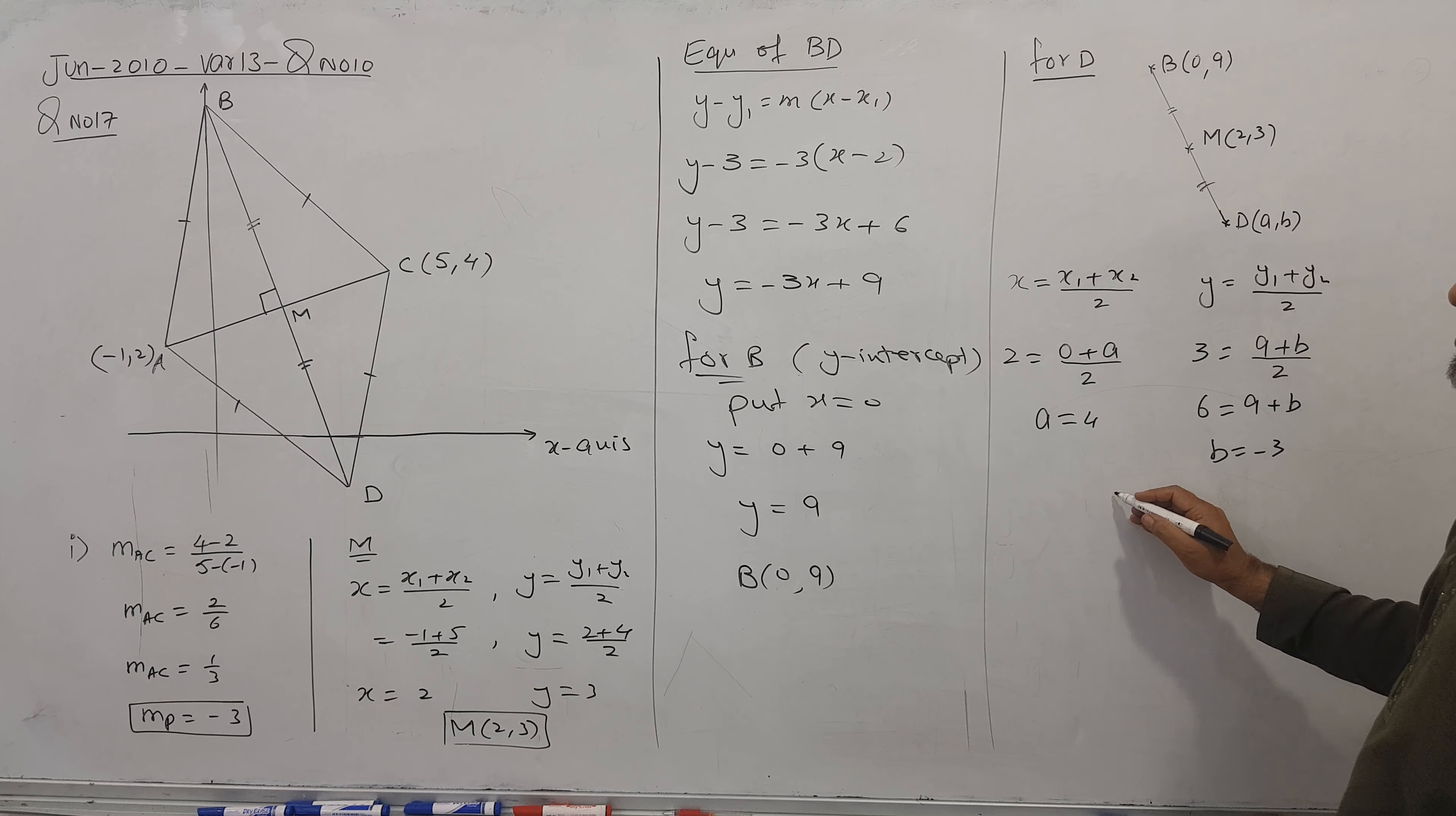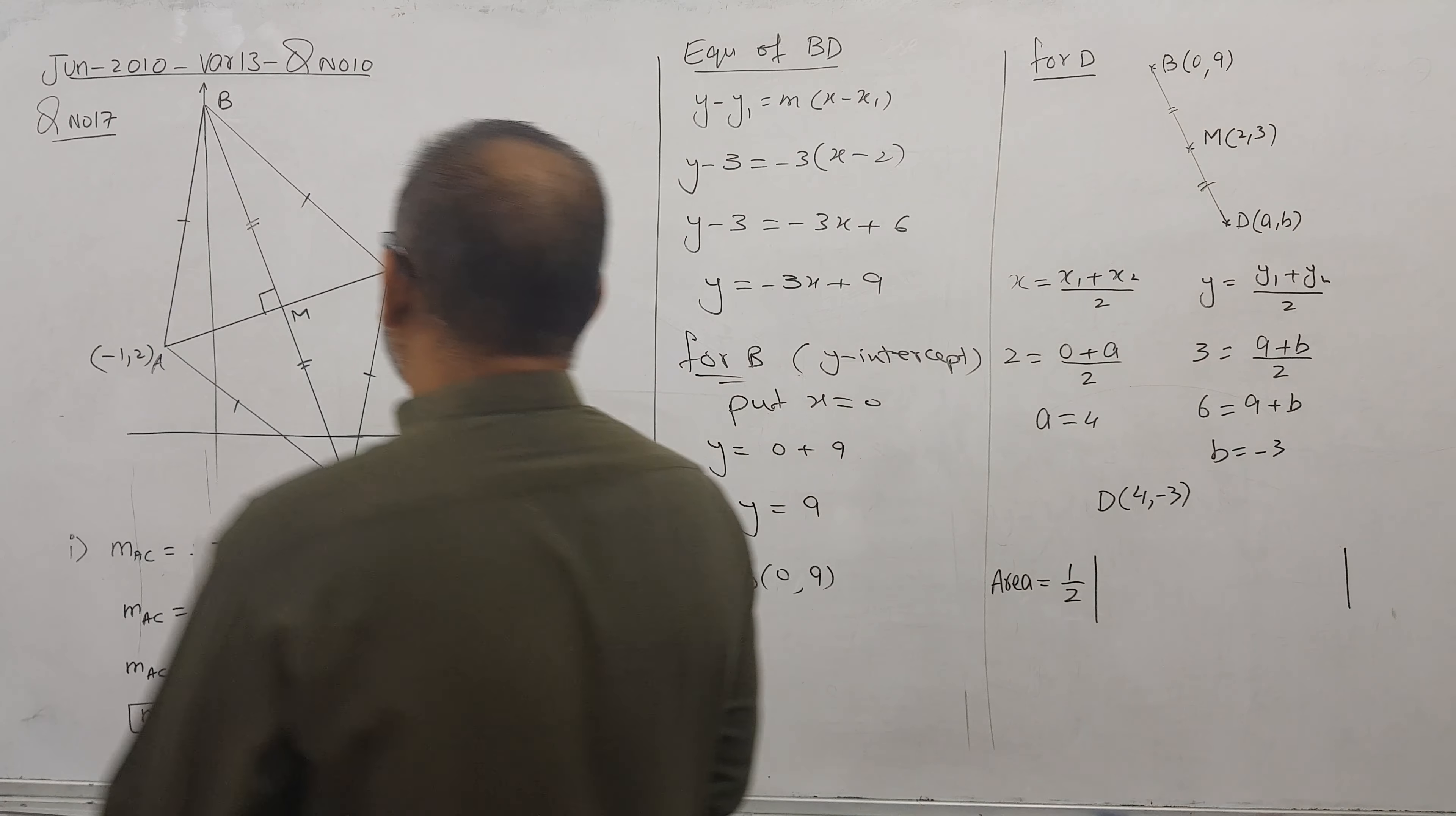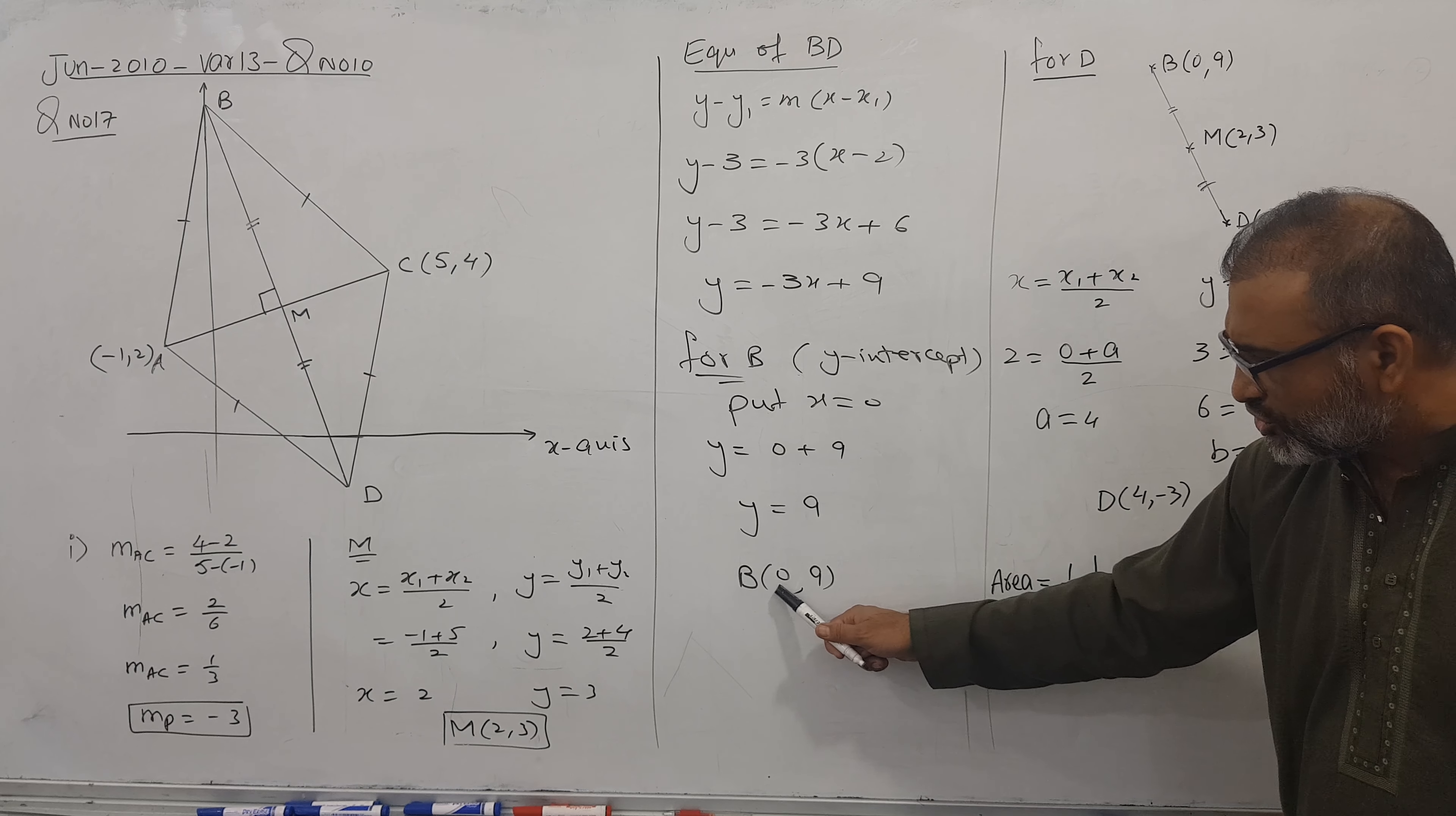So the answer is clear. D coordinate is 4 comma minus 3. But now for area, what do we need? We have a formula for the area of a closed figure, using modulus. I start from any point - I'll start from B, then C, then D, then A. I start from B because 0 is there. First, x up, y down. What is x coordinate? 0. What is y coordinate? 9. So 0 up, 9 down.